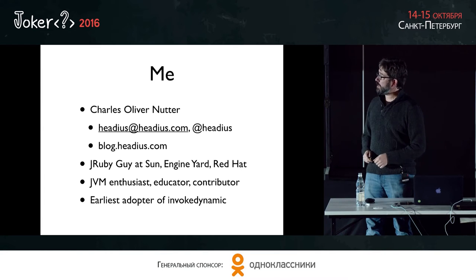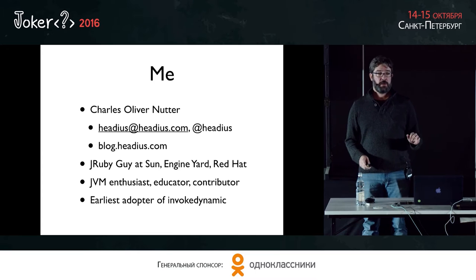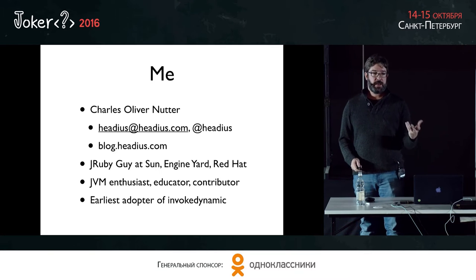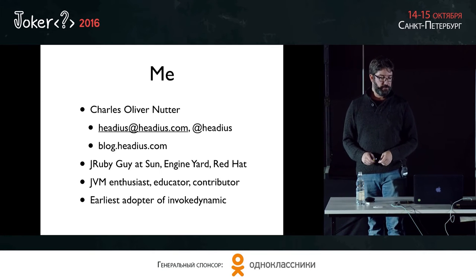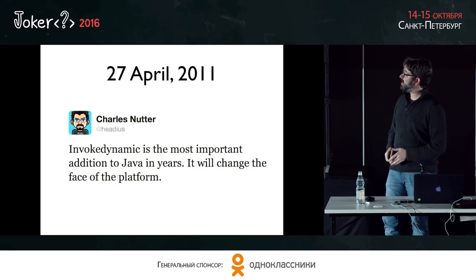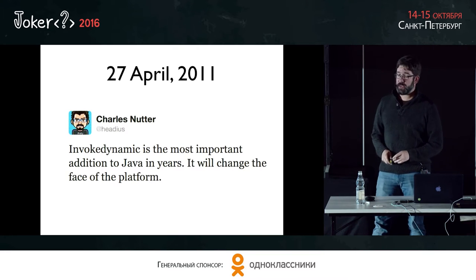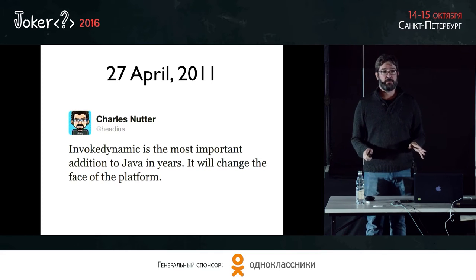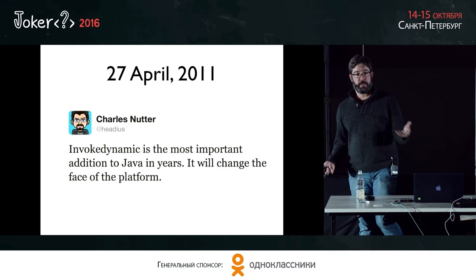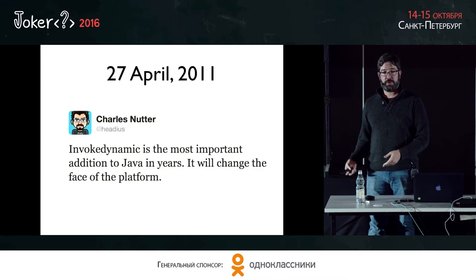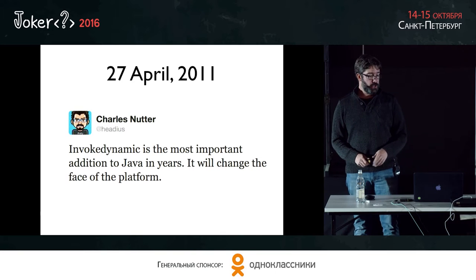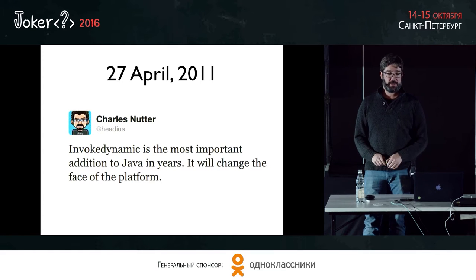JRuby is actually the earliest use of Invoke Dynamic ever. Before it was even released in Java 7, we were already starting to play with it and test it out, and it helped really make Invoke Dynamic into a good feature. Invoke Dynamic is already changing the way we look at the JVM. It's being used not only for dynamic language features, but for new Java features — Lambdas in Java 8, features coming in Java 10 or 11 for new generics and generating new classes on the fly. It really has changed the platform. Biggest, most important change to the JVM.